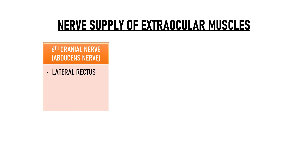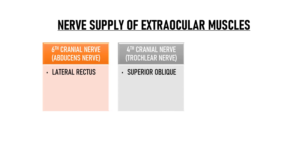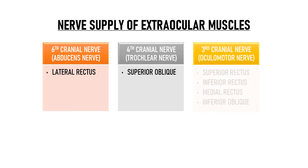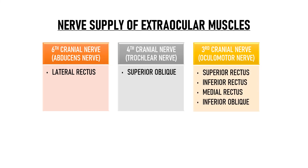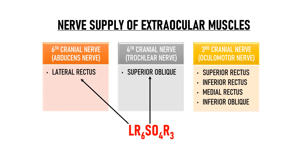The lateral rectus is supplied by the sixth cranial nerve — the abducens nerve. The superior oblique is supplied by the fourth cranial nerve — the trochlear nerve. The oculomotor nerve (CN III) supplies the superior rectus, inferior rectus, medial rectus and inferior oblique. A popular mnemonic is LR6SO4R3: LR (lateral rectus) is supplied by 6, SO (superior oblique) by 4, and R (remaining muscles) by 3.